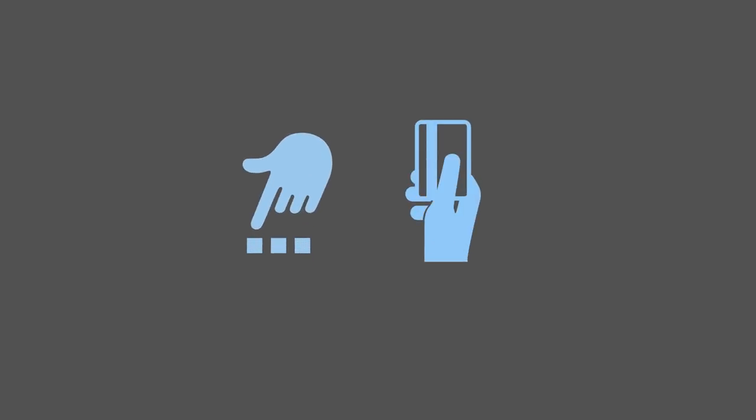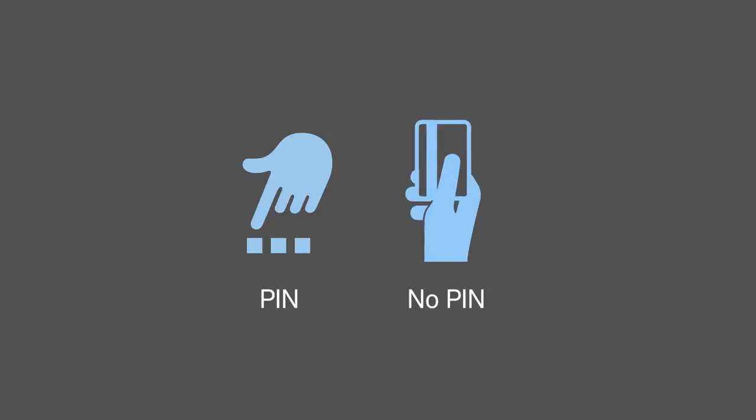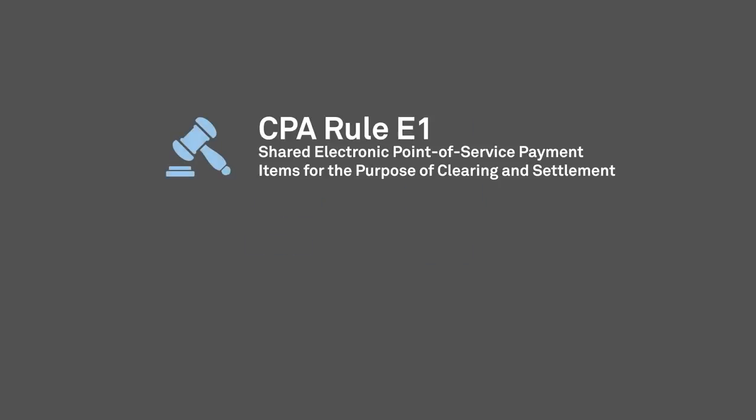The CPA has two rules which apply to in-person transactions at the point of service. One addresses payments where a card and a personal identification number, or PIN, are both required, and the other addresses transactions where the payment device, such as a debit card or key fob, doesn't require a PIN. First, let's examine Rule E-1.